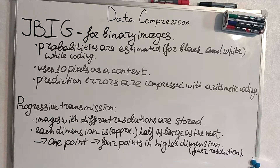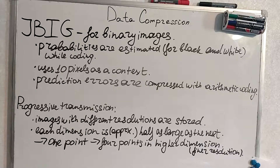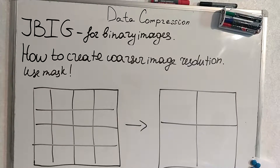JBIG supports progressive transmission. Images with different resolutions are stored and transmitted, and each dimension is approximately half as large as the next. One point corresponds to 4 points in the next final resolution. The progressive transmission results in about 5% overhead. JBIG can transform the image by making coarser resolutions.